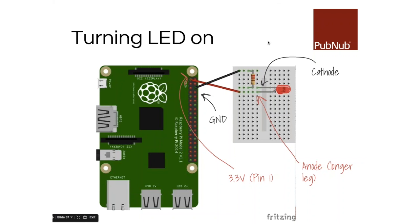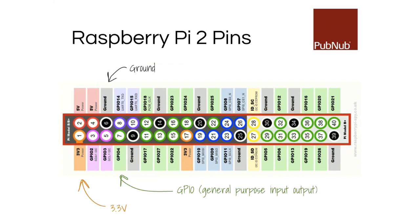Going back to the slide — this is essentially the diagram of what I just created: the same circuit with the Raspberry Pi as voltage source, LED, and resistor, all physically connected and lighting up the LED. Next I want to talk about GPIO pins. These are the GPIO pins for Raspberry Pi — GPIO stands for General Purpose Input Output.